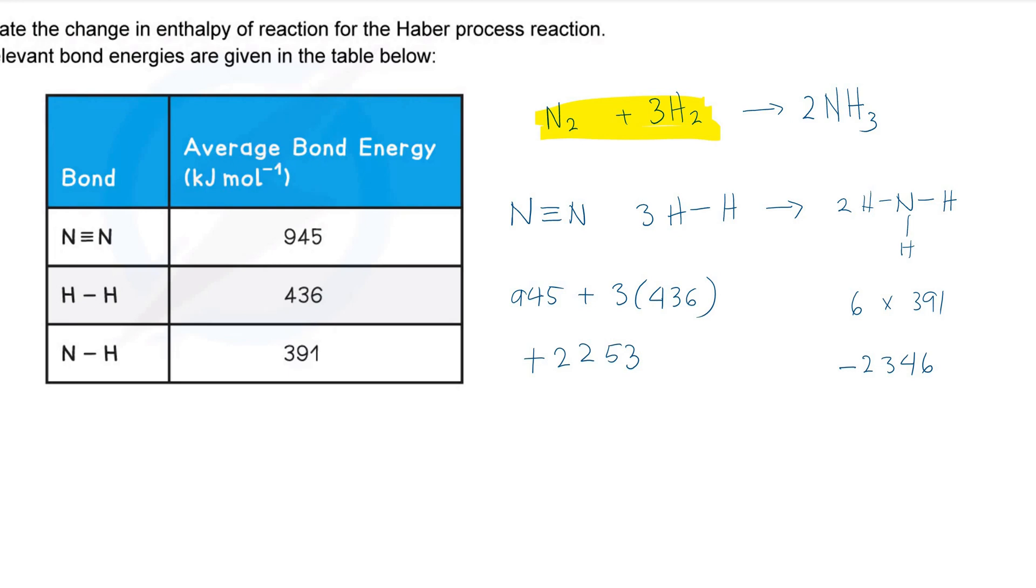Finally, total the values to get the enthalpy change of the reaction. Delta H of this reaction is negative 93 kilojoules.